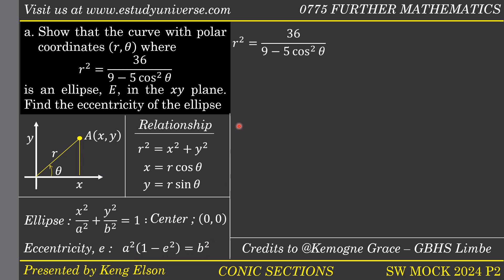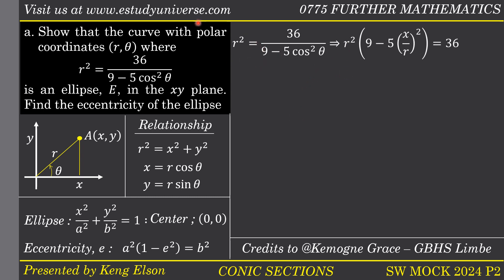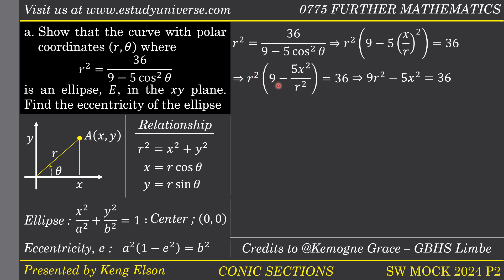We are given that r squared equals 36 divided by (9 minus 5 cos squared theta). Since cos theta equals x over r, cos squared theta equals x squared over r squared. Cross-multiplying gives r squared times (9 minus 5 cos squared theta) equals 36. Substituting cos squared theta with x squared over r squared, the r squared terms cancel, leaving 9r squared minus 5x squared equals 36. Replacing r squared with x squared plus y squared, we get 9(x squared plus y squared) minus 5x squared equals 36, which simplifies to 4x squared plus 9y squared equals 36.